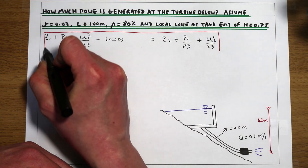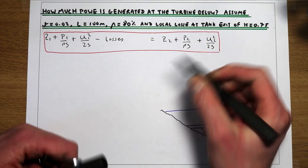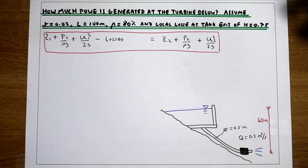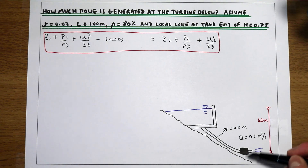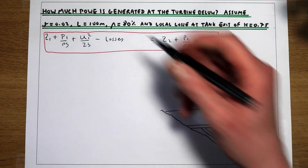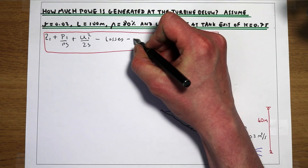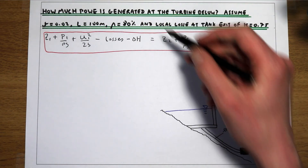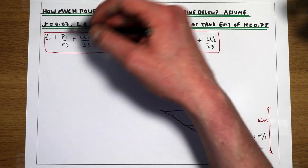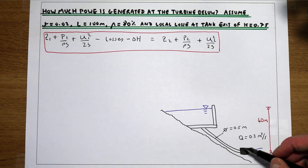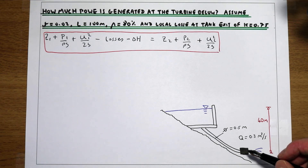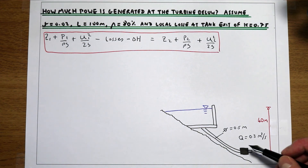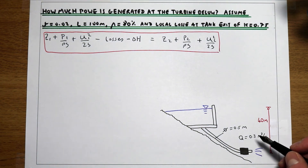In this example we've also got a turbine, and this turbine is going to be extracting energy from the flow and turning it into power. So we're going to have to add an extra term — a minus delta H — which is going to subtract pressure head from our initial energy, because this turbine is going to be taking energy out of the system.